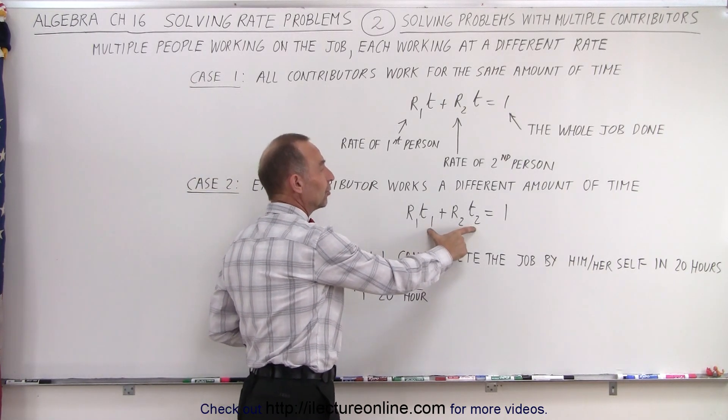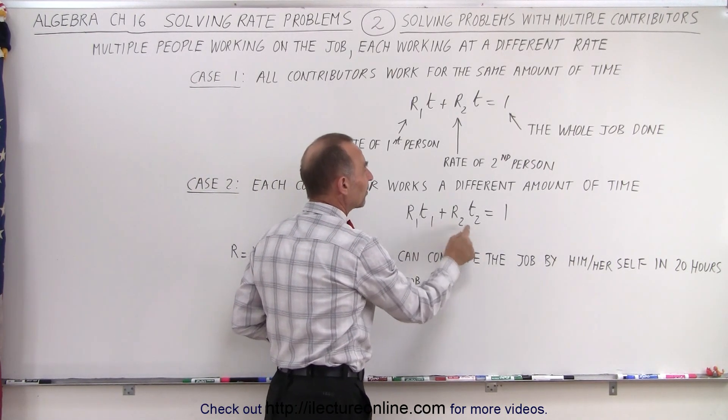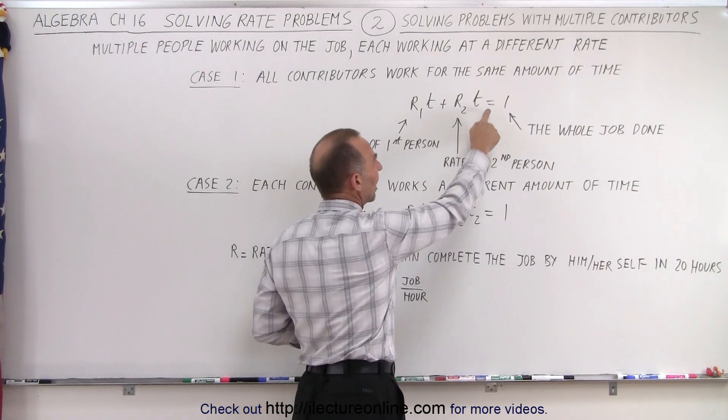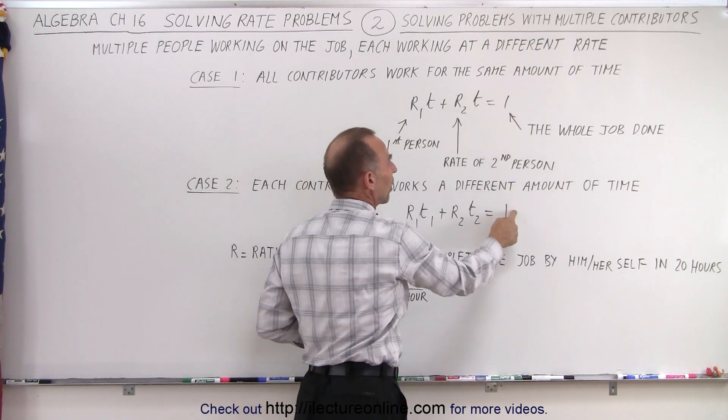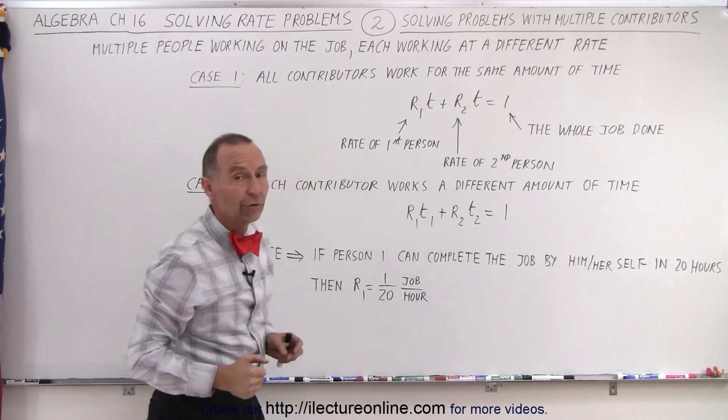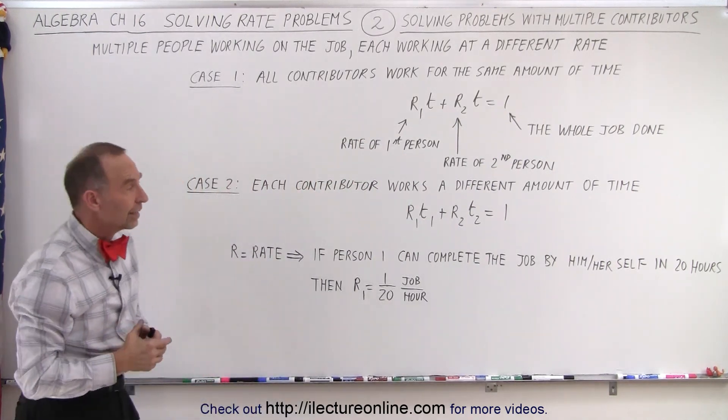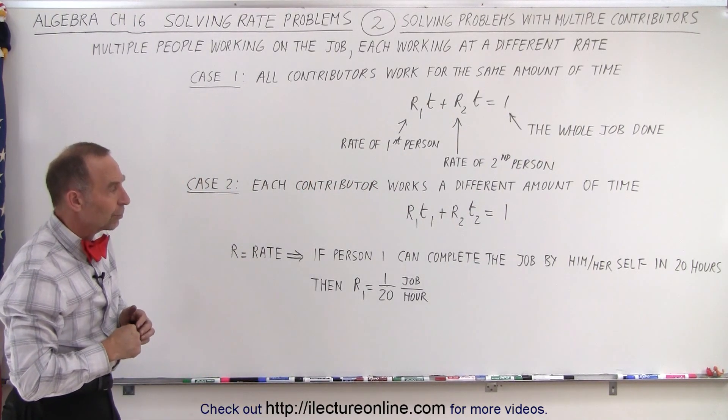Either they each work a separate amount of time, or they work the same amount of time, and we set that equal to the whole job done, and then we solve for the time that it takes for all of them to do the job together.